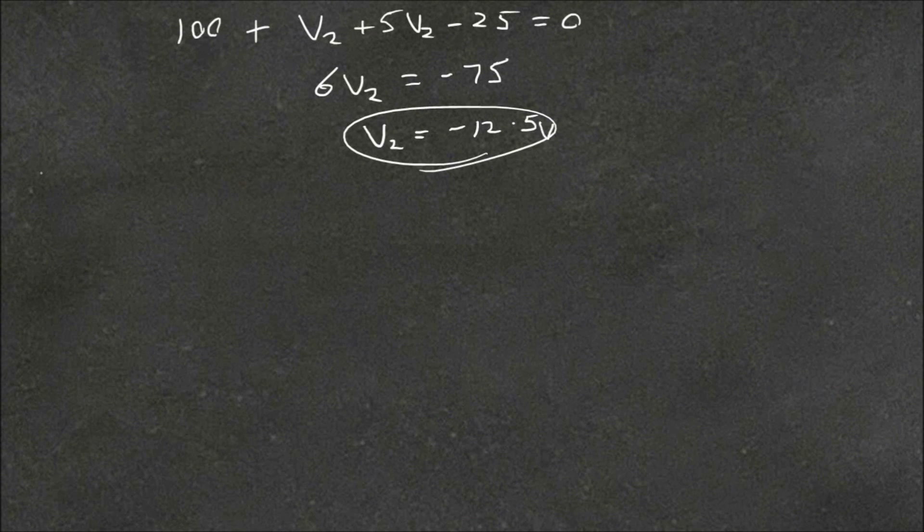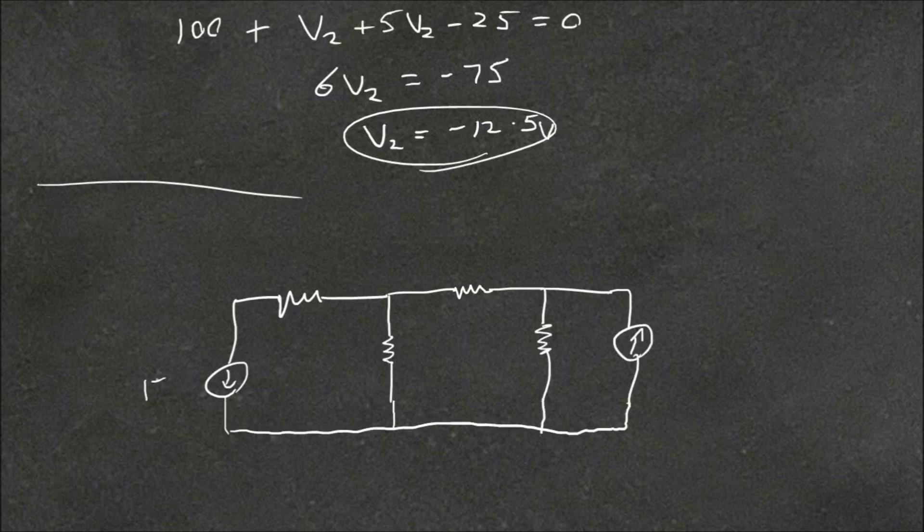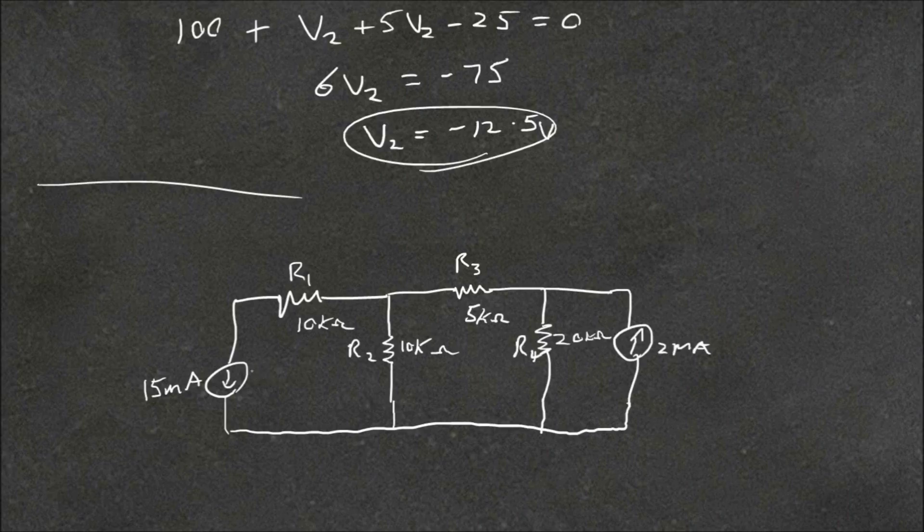We'll now look at a harder example. Because you often don't have just one unknown voltage. So this is our circuit. We're given a few values. And we'll label our parameters. We'll call that R1, R2, R3, R4. Call this one I1, I2. And we'll label our voltage nodes. So we'll call this V1, V2, and V3. And our reference is just down here.